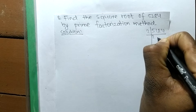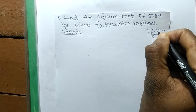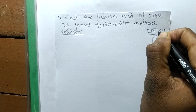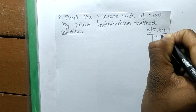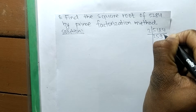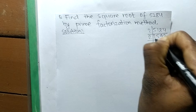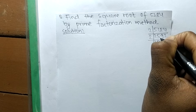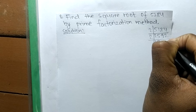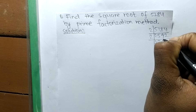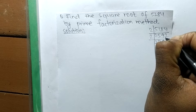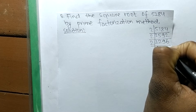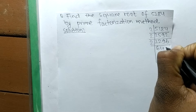So we start dividing 5184 by 2. 2 times 2 is 4, remaining 1, giving 1296. Then 2 times 5 is 10, remaining 1, giving 648. Again 2 times 9 is 18, and 2 times 2 is 4, giving 324. Then 2 times 1 is 2, 2 times 2 is 4, remaining 1, giving 162. Then 2 times 9 is 18, remaining 1, giving 81. And 2 times 6 is 12, then again 2 times 4 is 8.